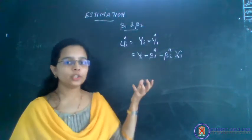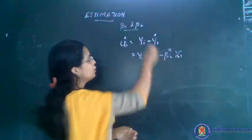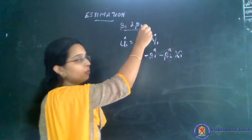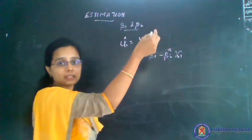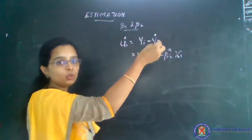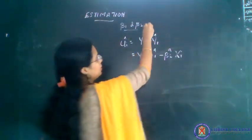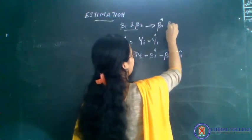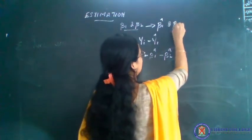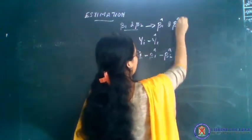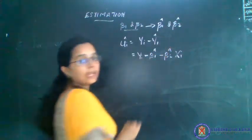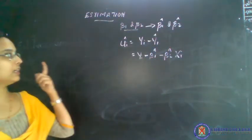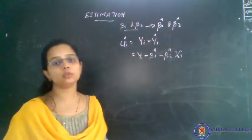Now we are going to the determination of beta 1 and beta 2. When we are determining beta 1 and beta 2, that means we are estimating beta 1 hat and beta 2 hat. These values are the estimated values of beta 1 and beta 2 respectively.